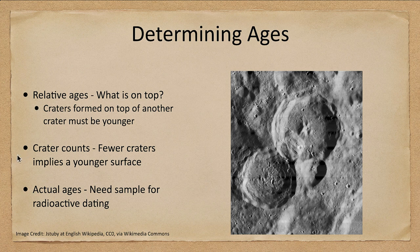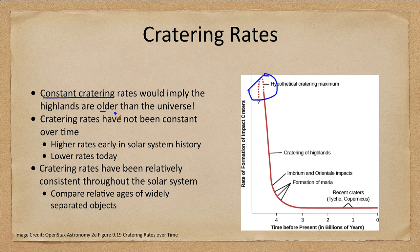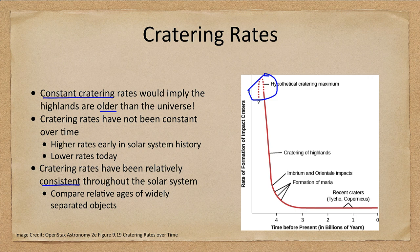How often are things cratering? Typically we look at rates of formation, and there would have been some kind of maximum in the early stages — really hard to tell, there were so many objects impacting. If the cratering rate were constant, then the highlands would be older than the universe. So we know cratering rates have decreased drastically over time — much larger in the past, much smaller today. However, they are about the same throughout the solar system, meaning this graph works just as well for Mercury as for our moon or a moon in the outer solar system. So we can use this to determine ages throughout the solar system, even for objects that are not close together.